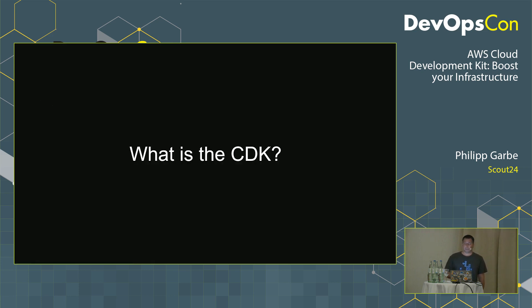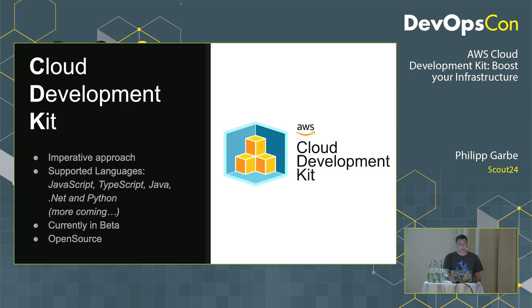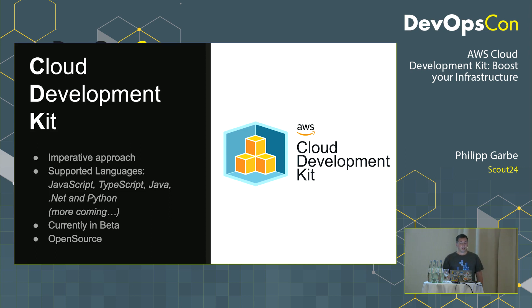So what is CDK? CDK stands for Cloud Development Kit and is one of these imperative approaches to writing infrastructure as code. The interesting part is that it supports different languages out of the box at the same level — you can use CDK in JavaScript, TypeScript, Java, .NET, and Python, with more languages coming. It's currently in public beta so you can try it out. The source code is on GitHub and you can also contribute or open issues — the team is quite active.